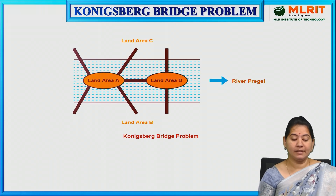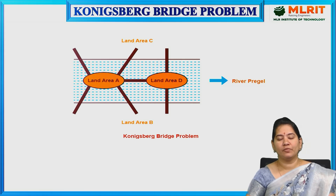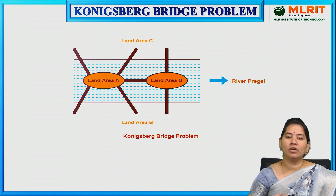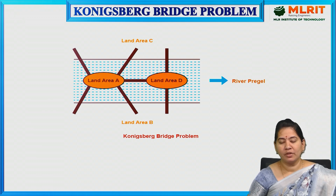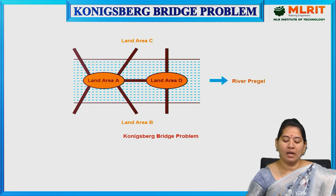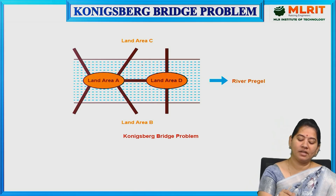First, let us understand the Königsberg bridge problem before discussing Euler path and Euler circuit. Königsberg is a former name of a German city, now in Russia. The river Pregel divides the city into four land areas.